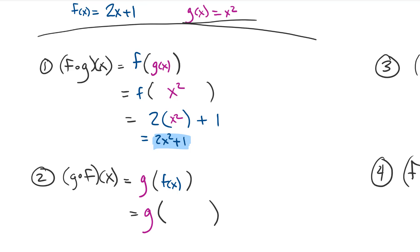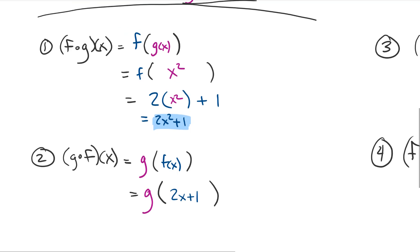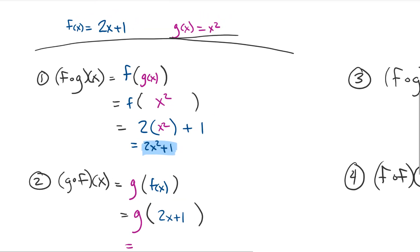Now we're just stating hey plug that thing into g. So g of blah. G of x was x squared. So g of blah is gonna be blah squared. And that blah is 2x plus 1. So what we're gonna find out is g of f of x is equal to 2x plus 1 all squared.